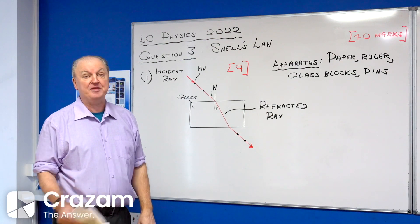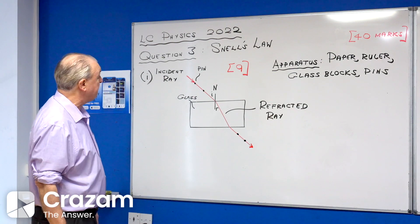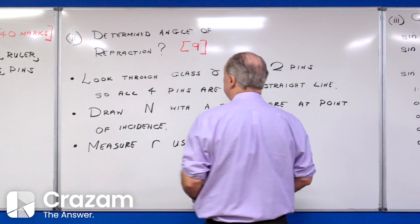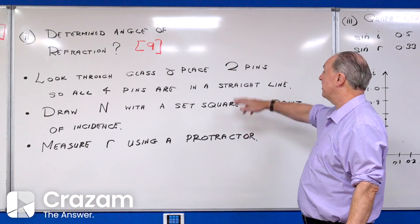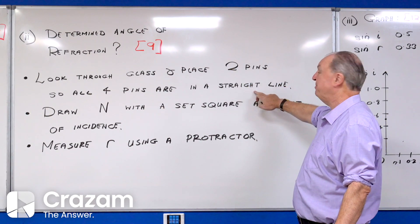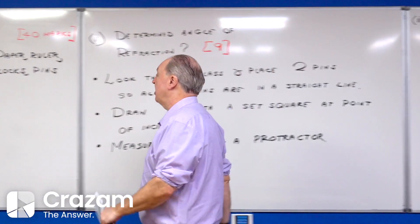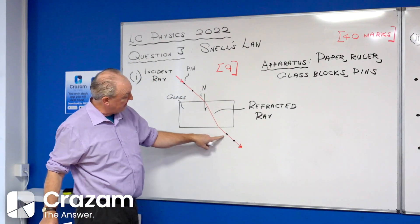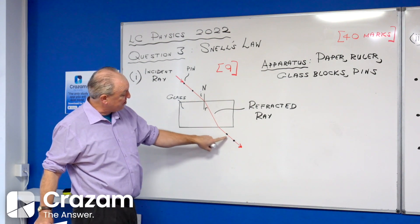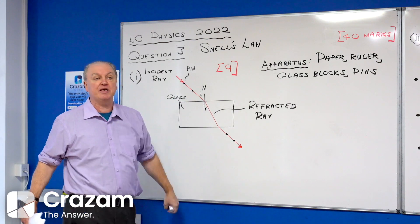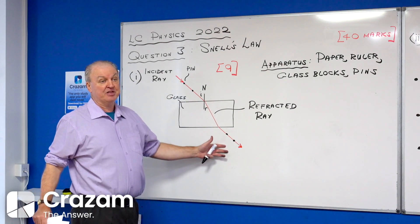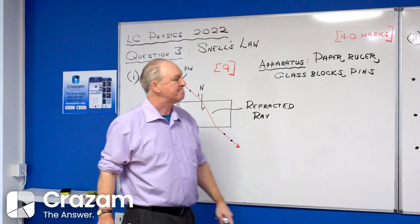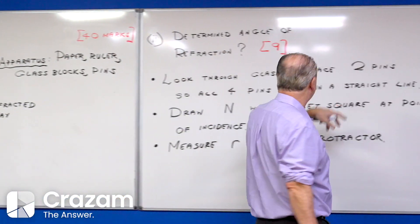It asks me to describe how the student determines the angle of refraction. Write down three or four simple sentences. I'm going to look through the glass on the far side and place two pins so that all four pins are in a straight line. I place two pins in the paper, draw the incident ray through there, then go to the other side and look through the glass and place two more pins so all four pins appear to be in a straight line.